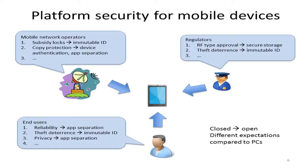One requirement for type approval is securely storing radio frequency parameters. When a mobile device is manufactured on the assembly line, it's initialized — every device is slightly different, and the parameters for radio communication are set at that time, such as the range of power with which that device can transmit. These parameters must be stored securely so that neither the user nor any application can change them. The integrity of these parameters is critical — changing them could cause public health issues or unfairly capture more bandwidth.